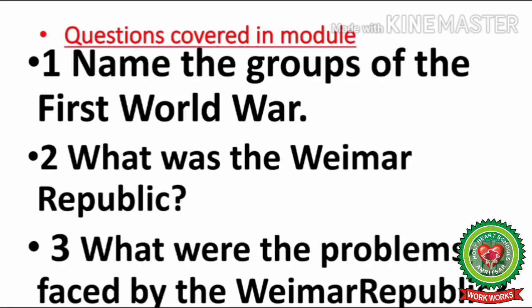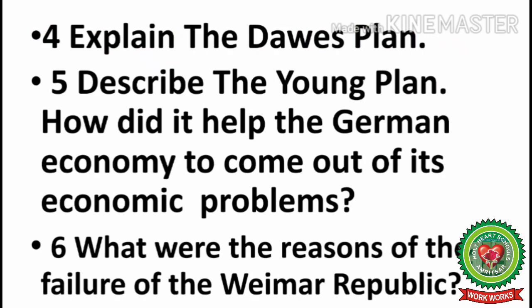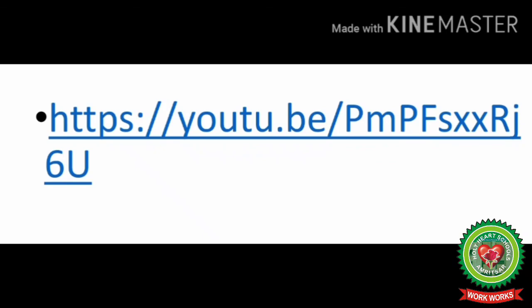These were the questions covered in this module: Name the groups of the First World War. What was the Weimar Republic? What were the problems faced by the Weimar Republic? Explain the Dawes Plan. Describe the Young Plan and how it helped the German economy. What were the reasons for the failure of the Weimar Republic? On your screen you can see a YouTube link — you can search more on the Weimar Republic by clicking it. With the help of this explanation and the internet, you are advised to make notes of this topic. I hope this session has been fruitful for you. We'll meet you in the next session. Till then, have a nice day.